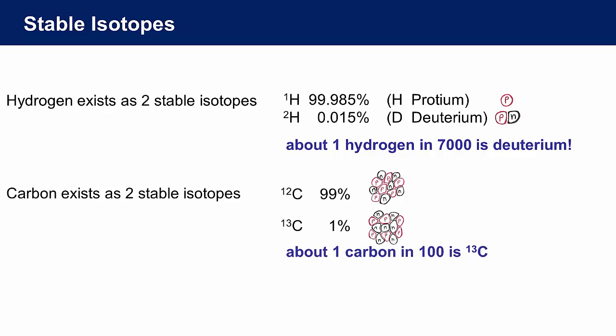A similar situation exists for the element carbon. There are just two stable isotopes of carbon. Most carbon atoms are carbon-12, which has 6 protons and 6 neutrons in its nucleus. But sometimes a carbon atom is the isotope carbon-13, which has 6 protons and 7 neutrons in its nucleus. Carbon-13 has a natural abundance of about 1%, meaning only 1 in 100 carbon atoms is carbon-13. The rest are all carbon-12.